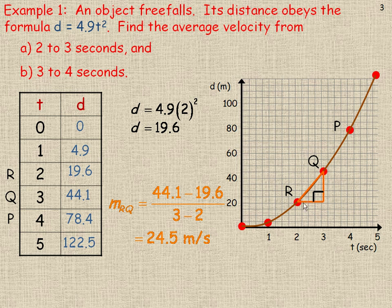Now on the graph, I'm going to draw a rate triangle. This rate triangle shows the slope of the secant between points R and Q. The slope of that line segment is 24.5 meters per second. The vertical distance is 24.5 and the run is 1, so 24.5 divided by 1 is the slope of 24.5. That's the average velocity between 2 and 3 seconds.